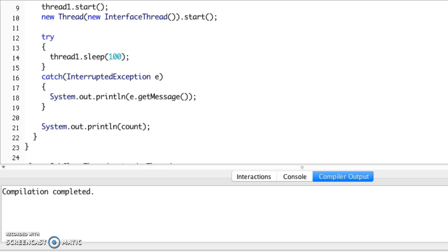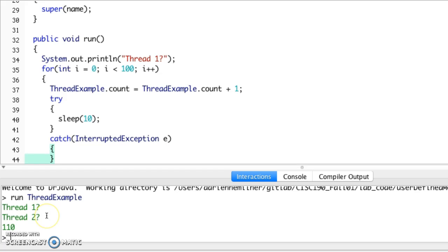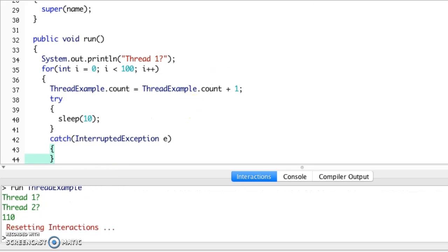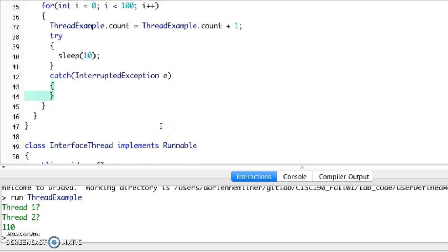So if we go ahead and compile and then run our code, we see instead of getting 200 which is what we expected, we get 110. What happens if we run it again? Oh, now we get 109. Run it again. 109. 110. Well this is interesting, the behavior is not what we expected at all, and from run to run it's actually changing. Why is this happening? Go ahead and download this code and run it yourself too. It's kind of fun.